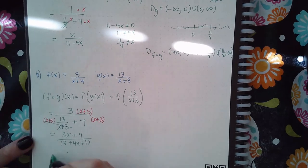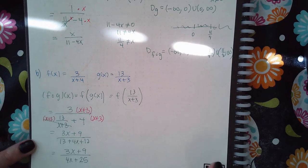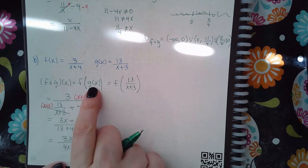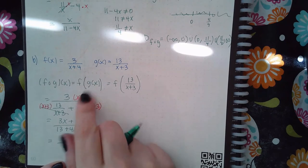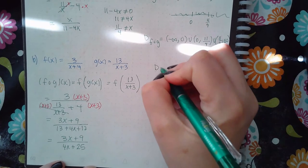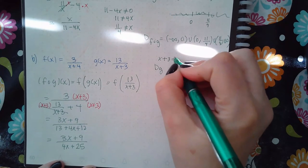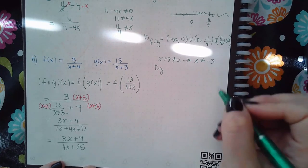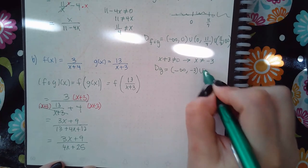Simplifying that gives 3x plus 9 over 4x plus 25. For the domain, the inside function must be considered first, since those are where the potential domain comes from. Looking at the domain of g, the denominator cannot equal 0, which means x cannot equal negative 3.